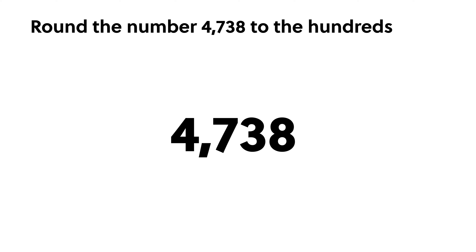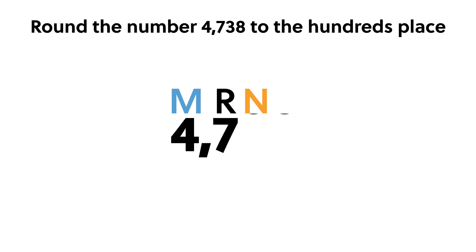For example, suppose we want to round the number 4,738 to the hundreds place — we call this rounding to the nearest hundred. The 7 is in the rounding place. We keep the 4 because it is more significant. To decide what to do with the rounding digit 7, we look at the next digit, the 3. Since 3 is less than 5, we keep 7 unchanged. We zero out the 3 and the 8 because they are less significant. So 4,738 is rounded down to the nearest hundred, giving us 4,700.